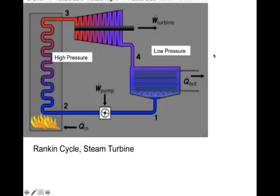A Rankine cycle is a steam turbine. Rather than heat gas, we heat water. We heat water, it boils, turns into steam, and turns a turbine. It's very important we condense the steam back into water, because we want this to be lower pressure. We have high pressure on one side of the turbine and low pressure on the other side, and that's what drives the turbine to generate electricity.